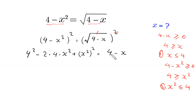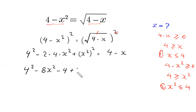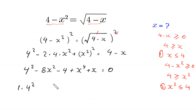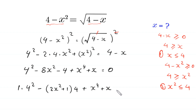Now we move these terms to the left hand side. 4 squared minus 8 times x squared, we move this plus 4 to the left hand side — it becomes negative 4 — plus x squared whole squared becomes x to the power 4, and this negative x becomes plus x at the left hand side, equal to 0.